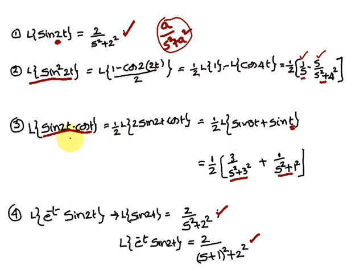Third problem: Laplace of sin(2t)·cos(t). Write it as (1/2)·Laplace of 2sin(2t)cos(t). Using the formula sin(A+B) + sin(A-B), this becomes (1/2)·Laplace of [sin(3t) + sin(t)]. Laplace of sin(3t) is 3/(s² + 9), and Laplace of sin(t) is 1/(s² + 1).